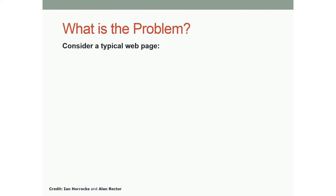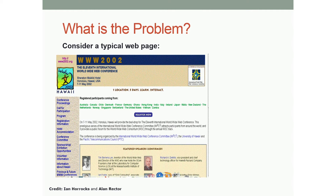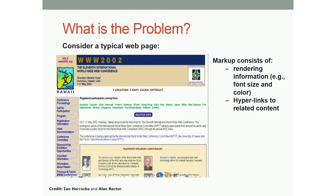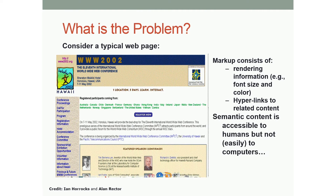What is the problem? Basically, this is a typical web page — it's about a conference and has all kinds of information represented in HTML, which is a markup language. What a computer can parse automatically from HTML is the rendering information — like font size, color, and hyperlinks. But other than that, the semantics represented in the page is actually prepared for humans, not for computer programs.